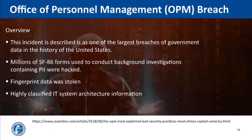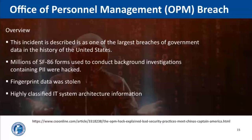Starting with OPM — the OPM data breach by hacker groups named X1 and X2 is described as one of the largest breaches of government data in the history of the United States. It took three years from the date of the initial breach for foreign intelligence services to formally catch the hacker group — a true low-and-slow attack. The breach affected millions of people. Cyber criminals were able to obtain SF-86 forms used to conduct background investigations, which contain very sensitive personal information. They also stole fingerprint data and highly classified IT system architecture information, which they used to move through the OPM network.